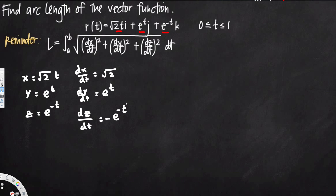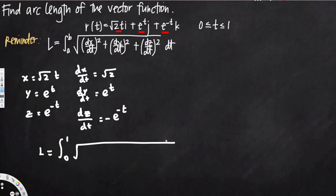Now that we have found the derivatives, all we have to do is plug them into the arc length equation. So L equals the integral from 0 to 1 of the square root of (dx/dt)² plus (dy/dt)² plus (dz/dt)² dt. That gives us the square root of (√2)² plus (e^t)² plus (−e^(−t))² dt.